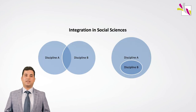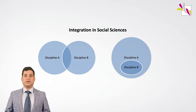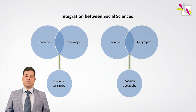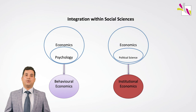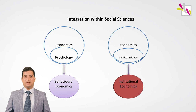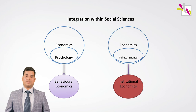In social sciences, integration happens between disciplines and also within a discipline. For instance, economics and sociology are well integrated, resulting in the emergence of economic sociology, while economics and geography are also merged as economic geography. Within the core discipline of economics, the discipline of psychology is used to understand behavior, emerging as behavioral economics. Likewise, components and assumptions of political science are used to understand economic organization and institutions, emerging as institutional economics.